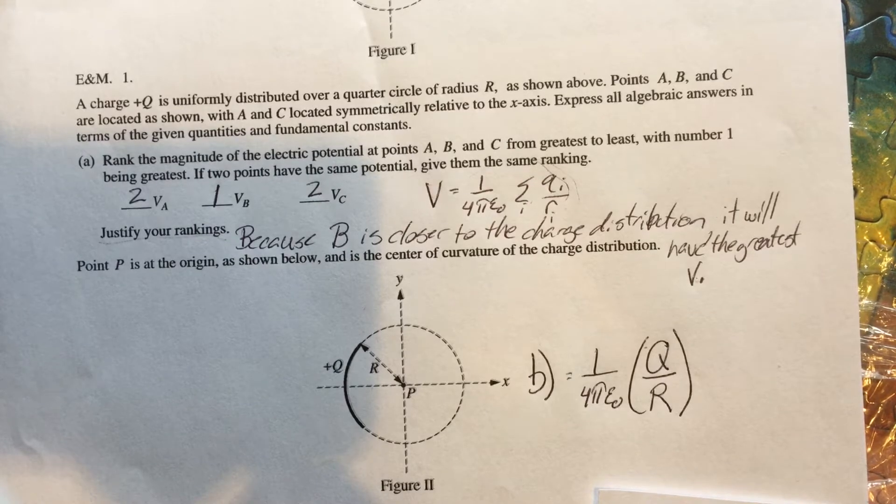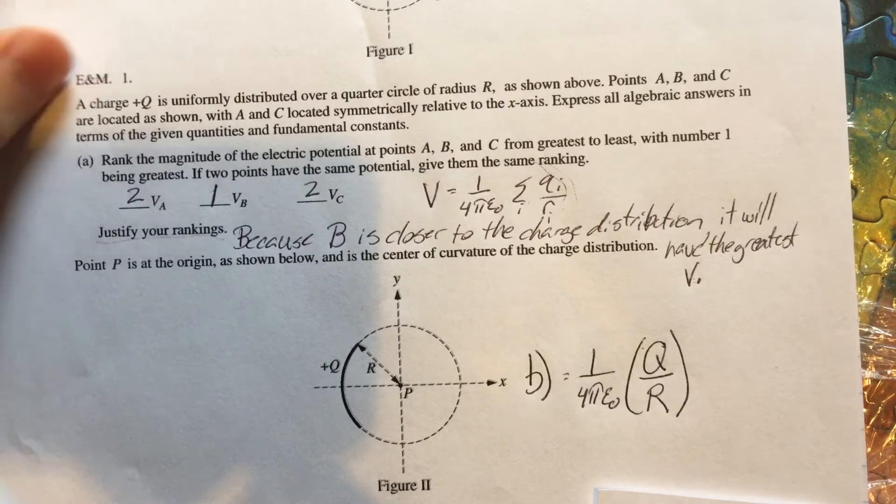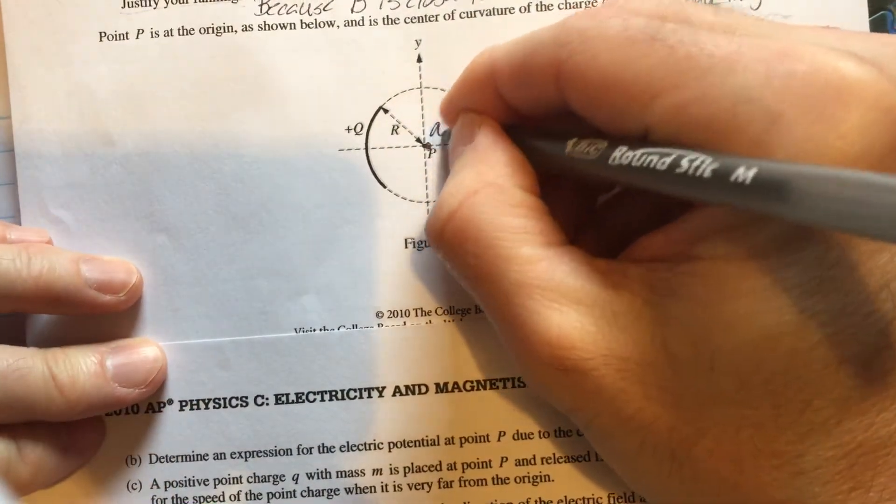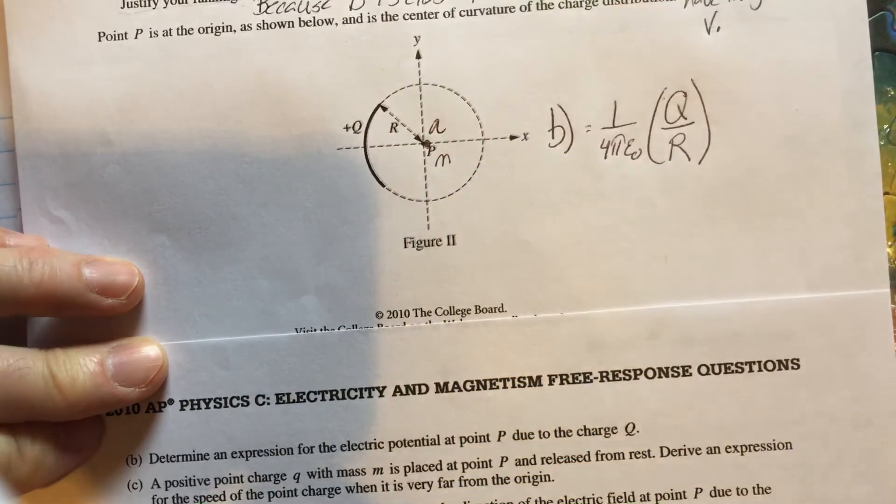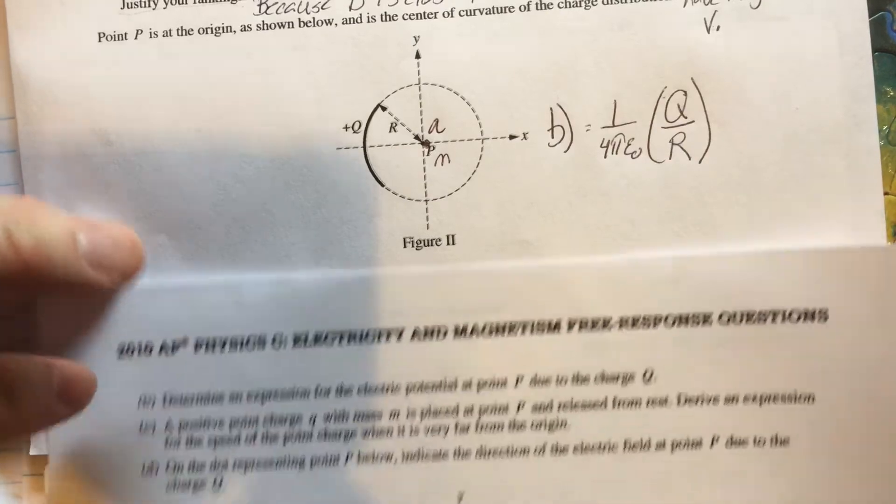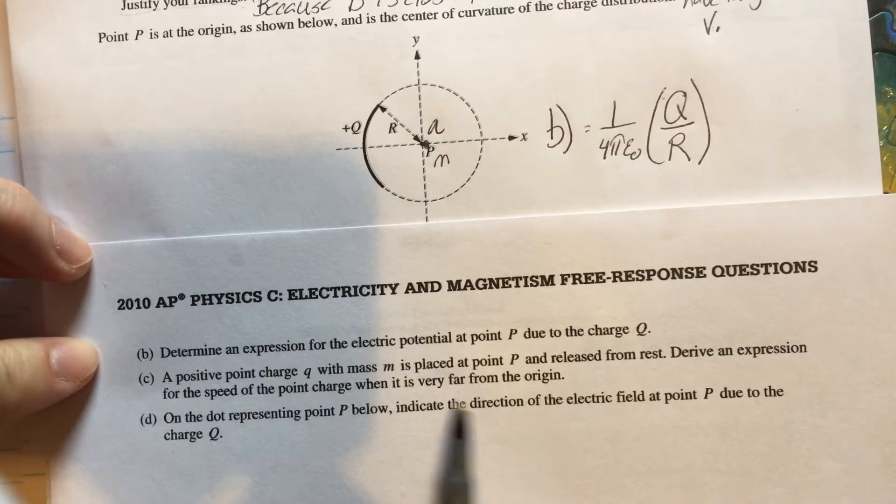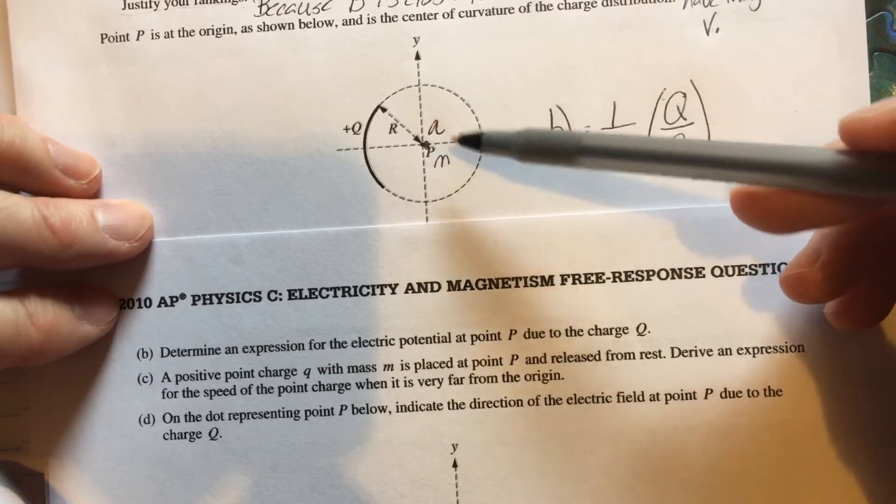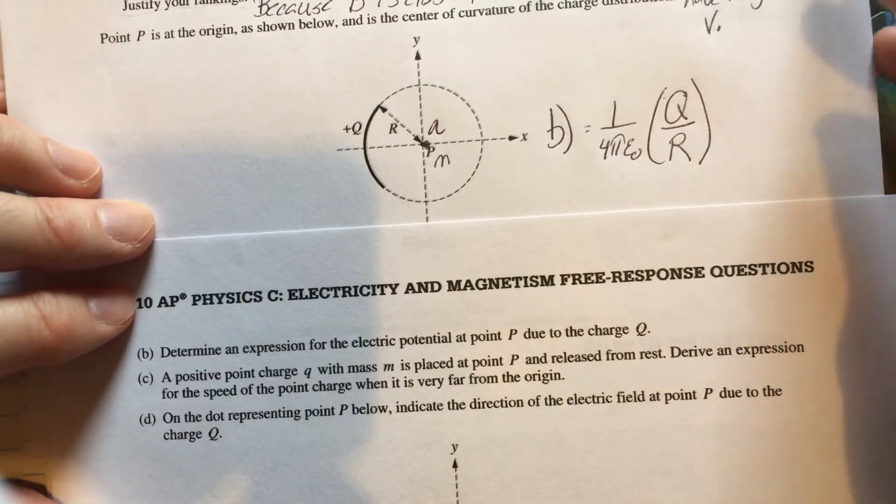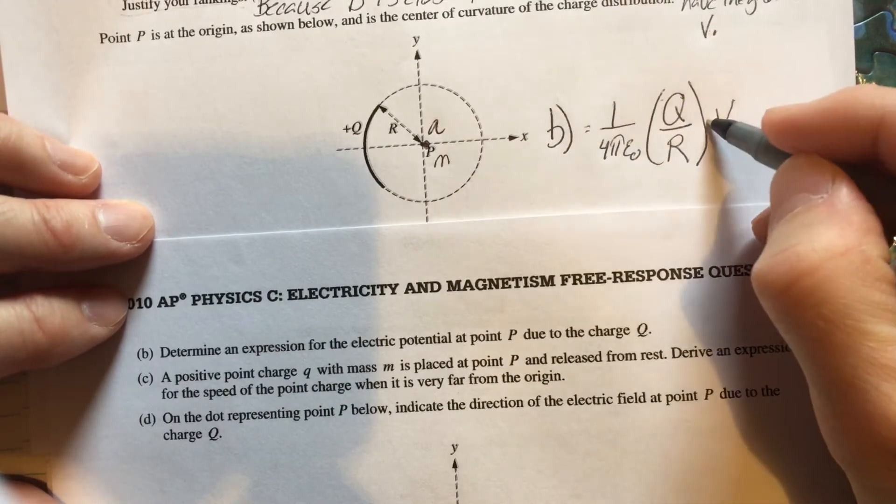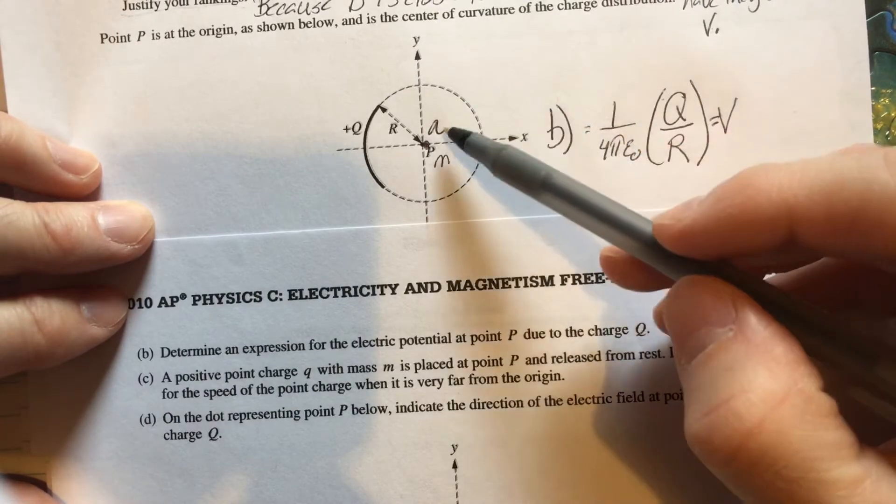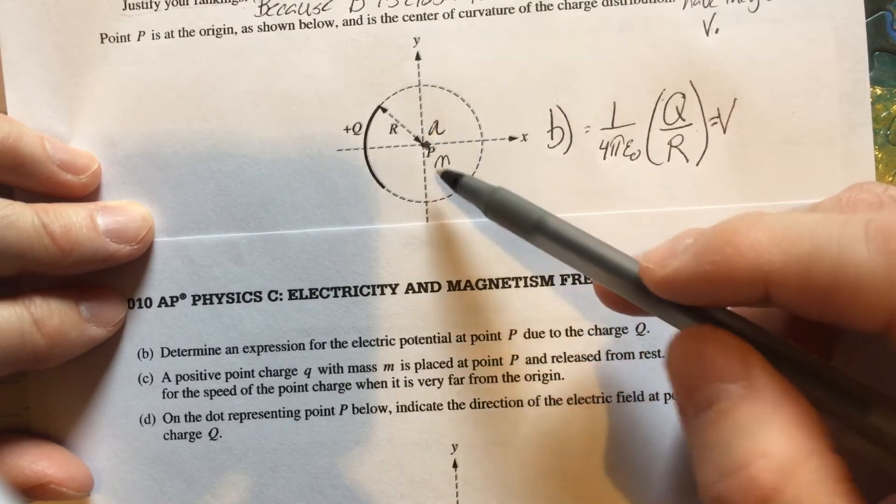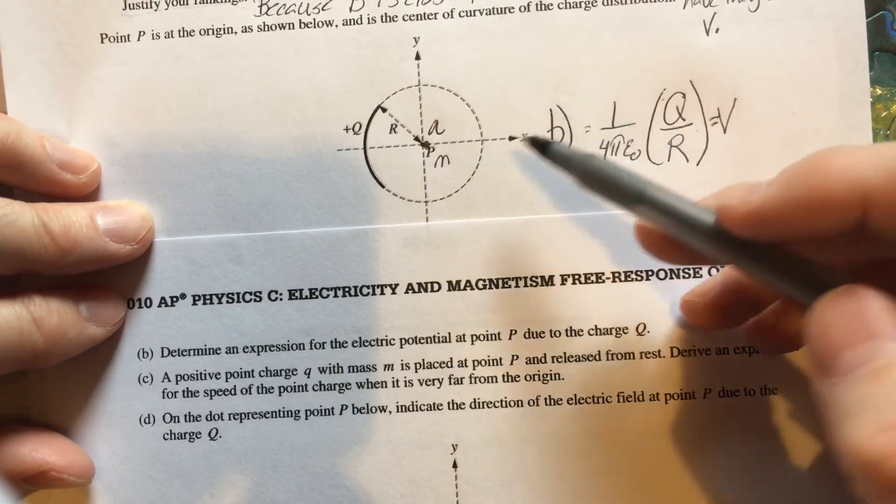Now, they do actually put a positive point charge Q with a mass of M right there. So let me show that to you. So we take a little point charge, a little Q, we put it there. It's got a mass of M, and it's released from rest. And we want to derive an expression for the speed of that point charge when it's very far from the origin. So, I don't know, that should really leap out at you that we're talking about a conservation of energy.